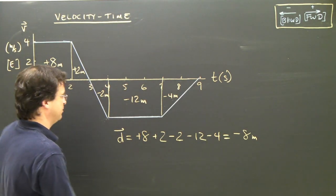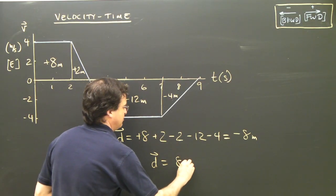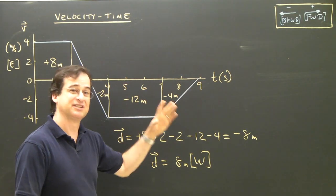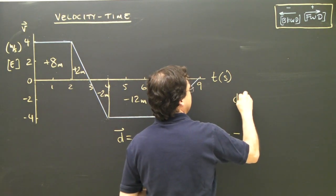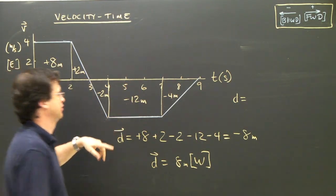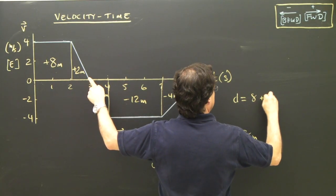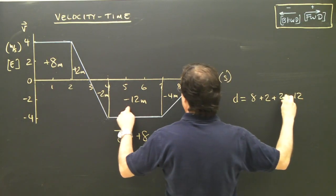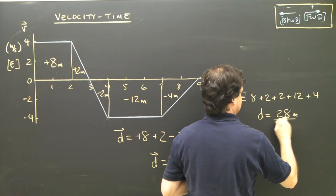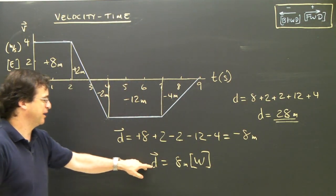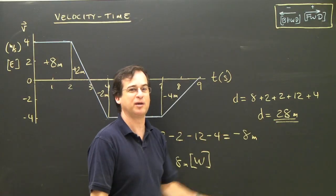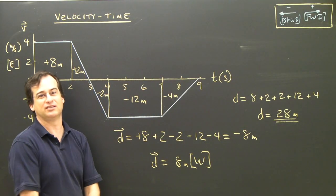Negative eight means backward, and backward means west, so my displacement is eight meters west. Now for distance — it's a scalar, so we don't include direction. The area under the graph gives distance or displacement depending on whether you use the positives and negatives. For distance I just add up the magnitudes: eight plus two plus two plus twelve plus four equals 28 meters. No direction needed because it's distance. I've walked 28 meters but ended up eight meters west of where I started.